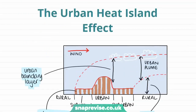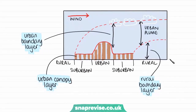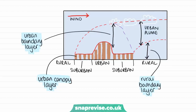Now we're going to look at the urban heat island effect in relation to temperature. Urban and suburban areas experience higher temperatures than the surrounding rural areas. This is what constitutes the urban heat island effect — that cities are warmer than the rural areas. We can see this in the diagram, where temperatures are rising in this plume across and over the suburban and urban areas, whilst the rural areas on the outskirts are much cooler. This is why annual mean temperatures in cities can be one to three degrees warmer than rural areas.